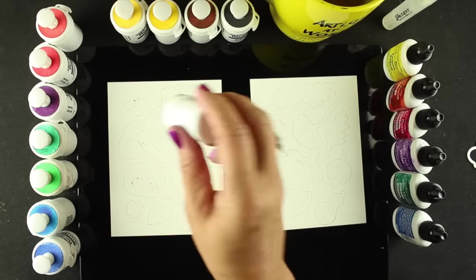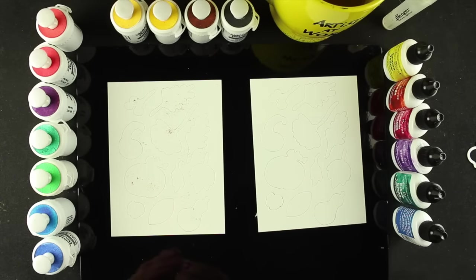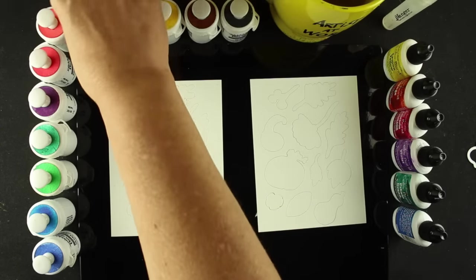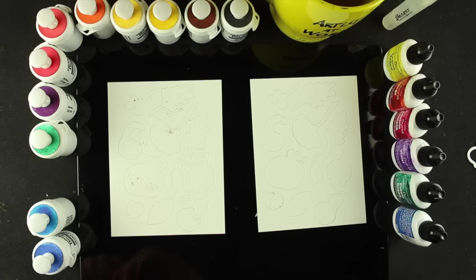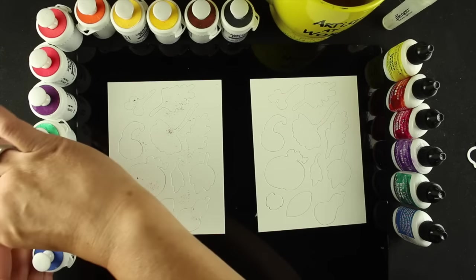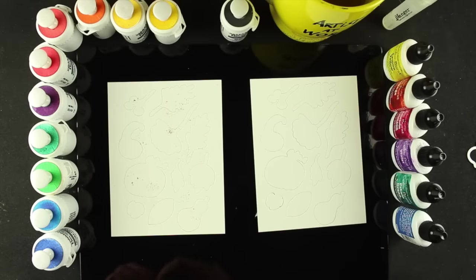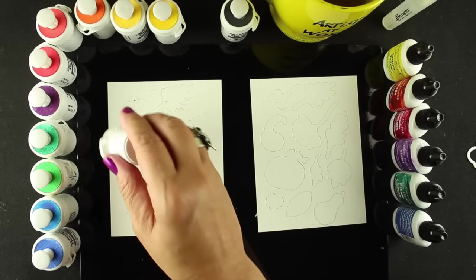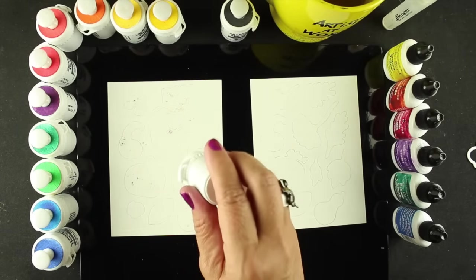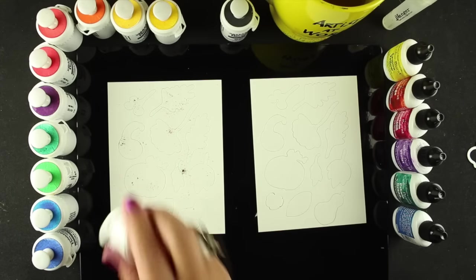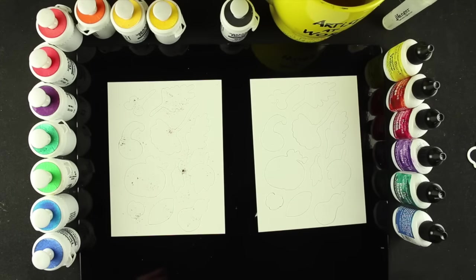You could also do the whole sheet and then die cut it. But what I found happens here if I die cut it first is that I don't end up with quite as harsh a white outline around it because that water seeps down into the crack in between where the die cut has happened and you don't end up with that as much of a white line. So that's why I did this.